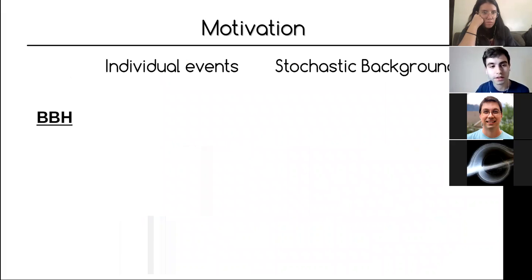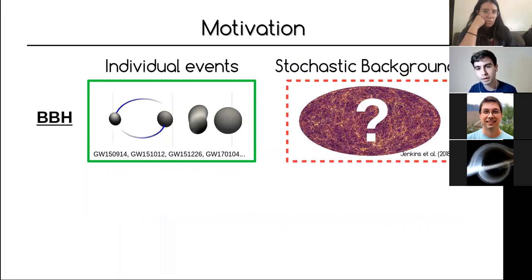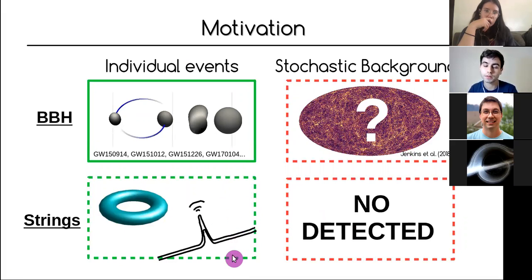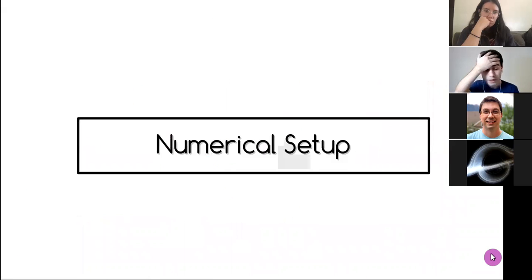In the same way as has been done in binary black holes — we've detected about 50 individual events — we have not yet detected the stochastic gravitational wave background. In the field of cosmic strings, most work has focused on the stochastic background, which hasn't been detected. But that doesn't mean we shouldn't see an individual event, such as a loop that collapses or a string that radiates — what is known as a cusp.